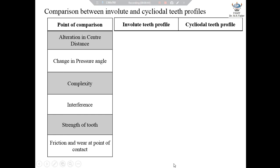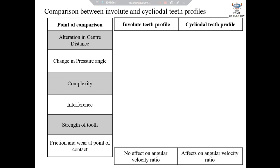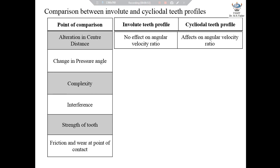Let us start with the first point: alteration in center distance. A little alteration in center distance between the shafts is allowed in case of involute gear tooth profile and it does not affect the angular velocity ratio. However, in case of cycloidal teeth profile, we have to maintain the exact center distance; otherwise, a change in center distance changes the angular velocity ratio.